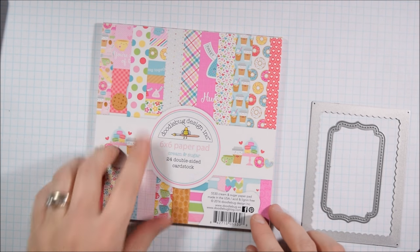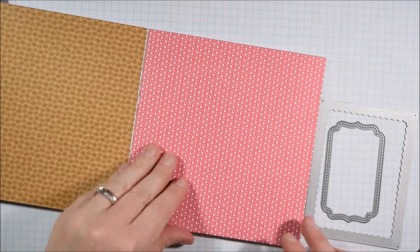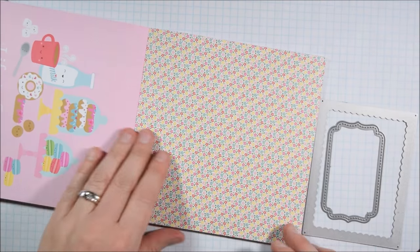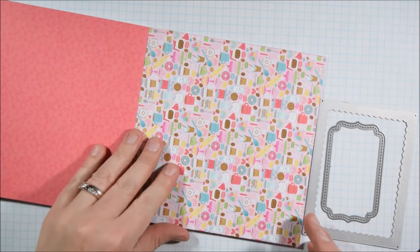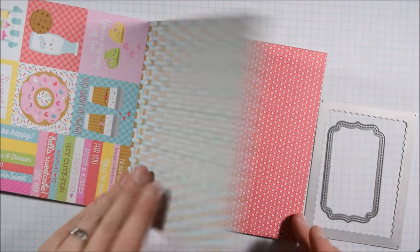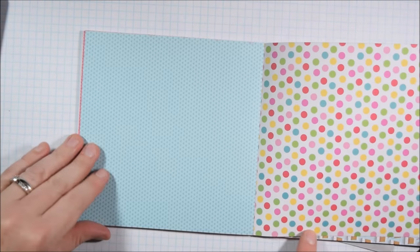This is the new Doodlebug Designs Cream and Sugar paper pad. It seems to be really popular. A lot of people like it. I love Doodlebug and I don't always go for their 6x6 pads, but I really like this one and the coffee theme.